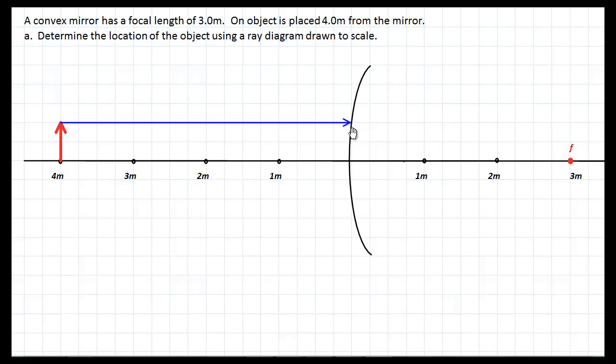It goes along, it strikes the mirror and it's going to bounce off the mirror so that it diverges along where my hand is. But it doesn't diverge randomly. It diverges along a line that's in line with our focal point. So how does that look? Let's draw that in now.